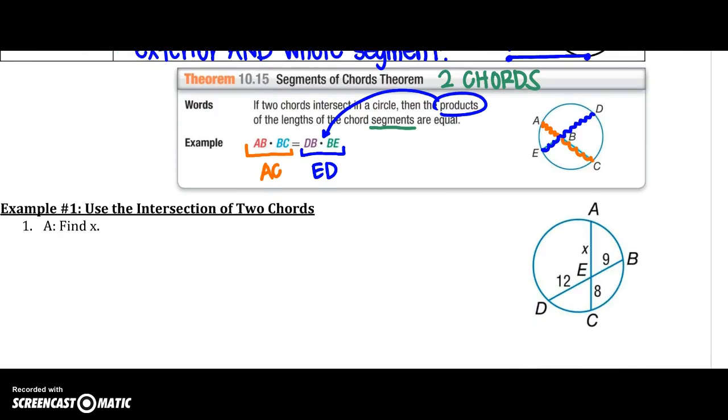A couple examples. The first one, finding X. So I have two chords, AC. And AC is made up of AE times CE. So we know that the products are then equal to my other chord, which is DB. So then I would say DE times BE.